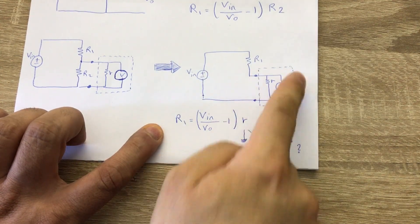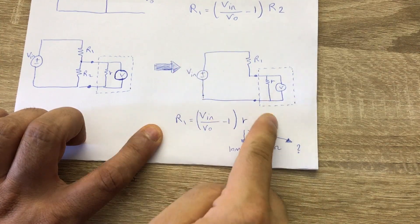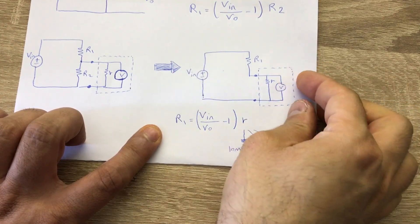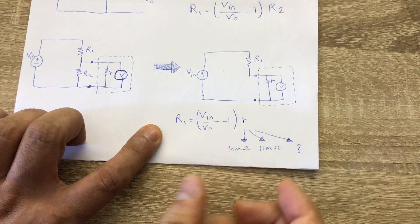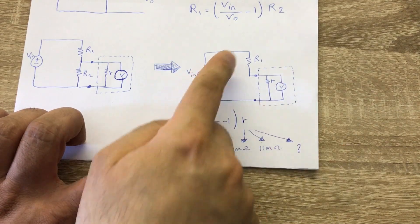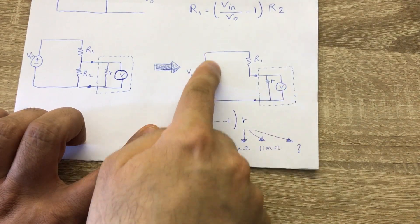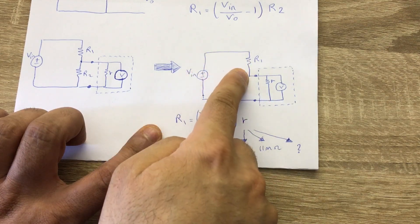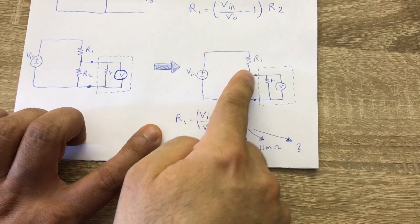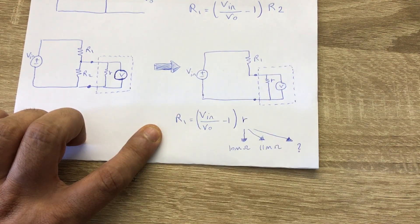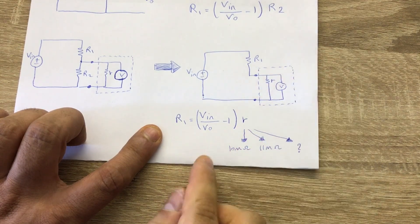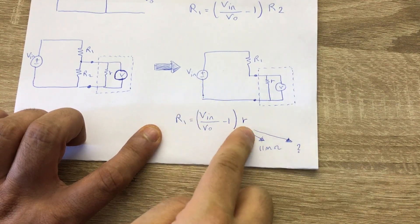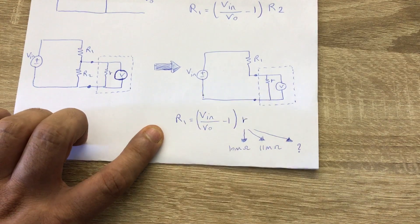The output voltage in this circuit is already the voltage that the multimeter reads directly. Normally we connect a multimeter in parallel, but in this case we connect it in series with the test setup — on the voltage range, in series. Whatever value we read is V_out, and we already know V_in and the internal resistance from prior measurement.